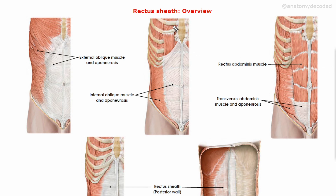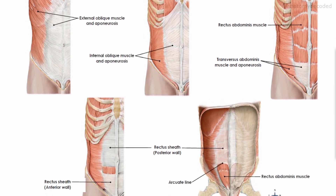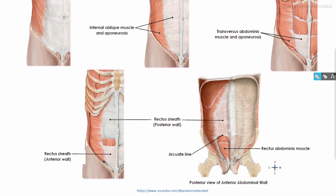So there are three different parts of the rectus sheath. The first part is up to the costal margin. The second part extends up to a line called the arcuate line — when we see the posterior wall of the rectus sheath, it is deficient at one level, and that line is referred to as the arcuate line. So the middle part goes from the costal margin to the arcuate line, and there is a lower part of the rectus sheath which goes up to the pubis.